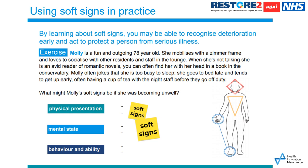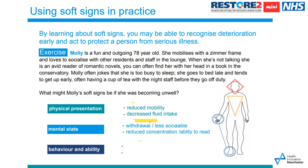Consider her soft signs across physical presentation, mental state, behaviour, and abilities. For physical presentation, perhaps her mobility might be reduced and she might drink less. She might become more withdrawn or less sociable, with reduced concentration and reduced ability to read. In terms of behaviour and abilities, perhaps she might become more tired than usual or spend more time in bed. These are all potential soft signs you might see in Molly should she be becoming unwell.